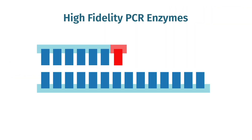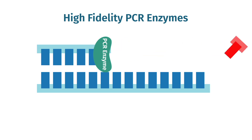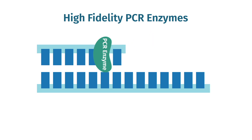Unlike standard Taq polymerase, high-fidelity PCR enzymes include a proofreading domain. When a mismatch is detected, the proofreading domain can excise the inaccurate nucleotide. However, proofreading activity does not come without risks.